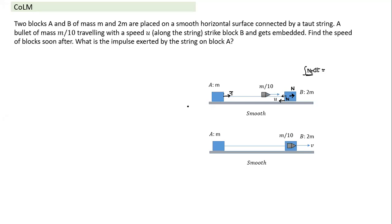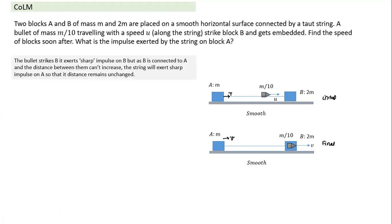As velocity tends to increase due to normal reaction, a sudden tension acts in the thread, slowing down block B slightly and speeding up block A so velocities remain equal. So there are two impulsive forces: N and T, both acting during the collision. This is the internal mechanism, though it is not required to solve the question. The key insight is understanding what is happening physically.